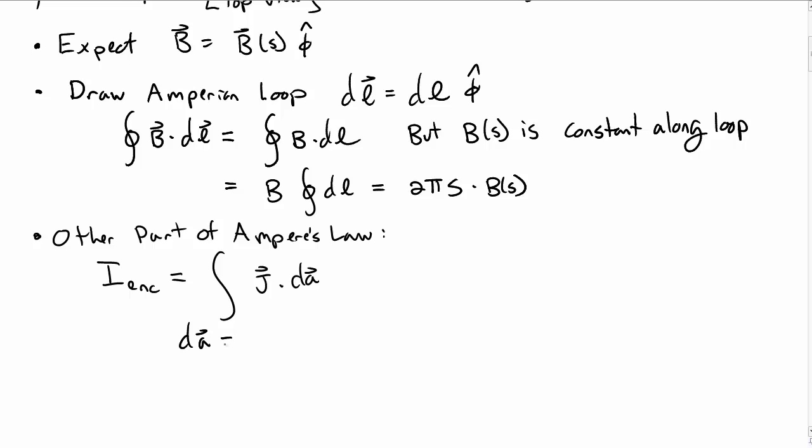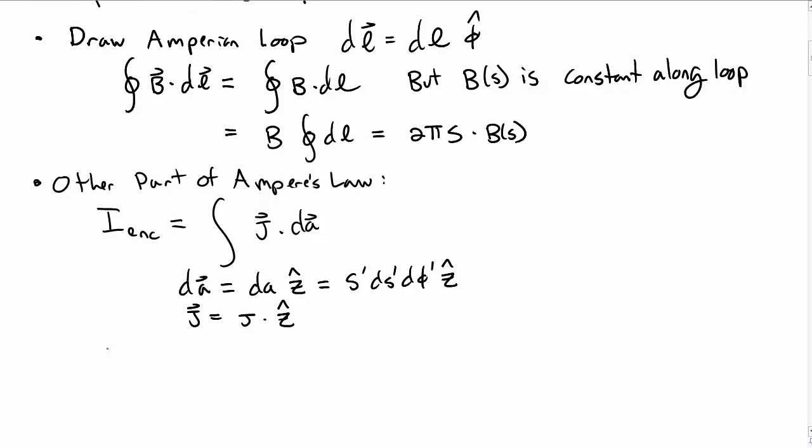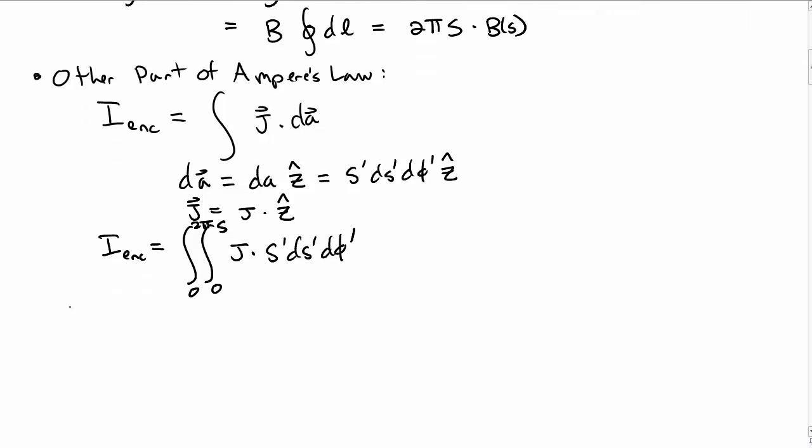You curl your fingers around in the direction of the loop. So dA is dA magnitude in the z-hat direction, or in cylindrical coordinates s prime ds prime d phi prime z-hat. j vector is just j in the z-hat direction. So i enclosed is the double integral of j times s prime ds prime d phi prime, with limits from 0 to 2π and 0 to s.